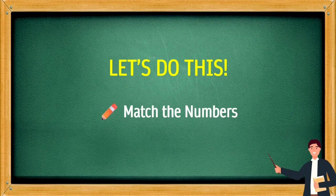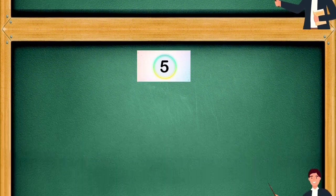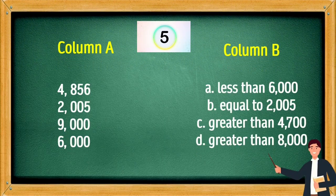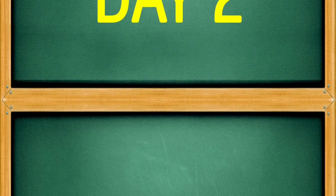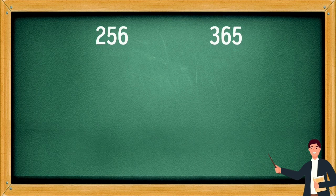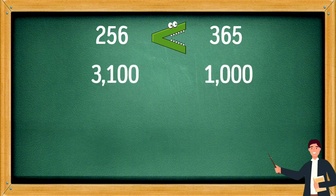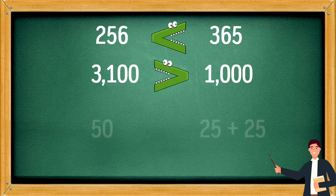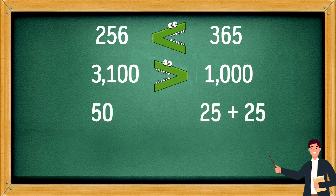Let's do this! Match the numbers. 156 and 365 — 156 is less than 365. 3,100 and 1,000 — 3,100 is greater than 1,000. 50 and 25 plus 25 — 50 equals 50.